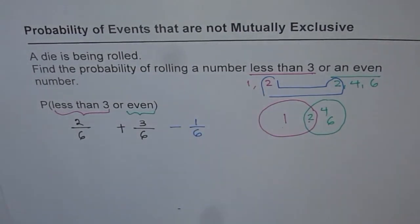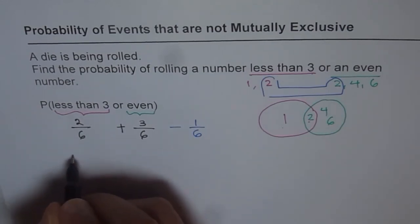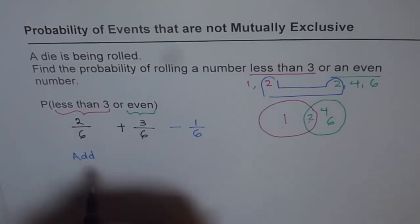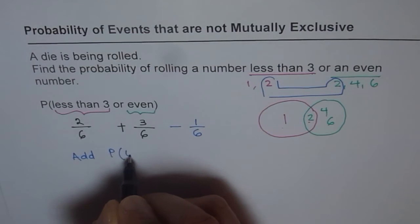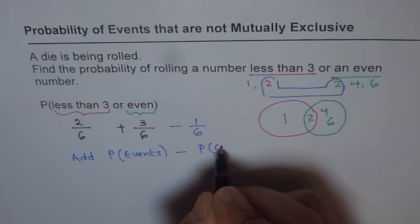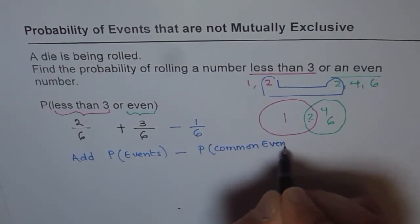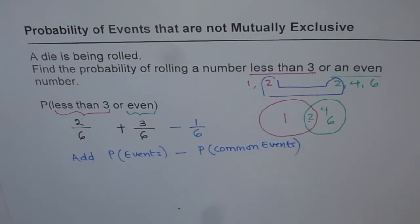So in all the cases where the events are not mutually exclusive, what do we do? Is probability, we add up. Add probability of events. And then take away probability of common events. So that is the strategy to solve such problems.